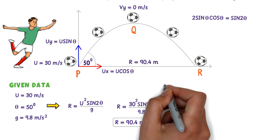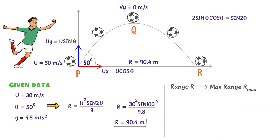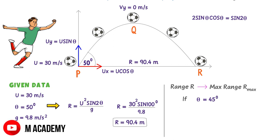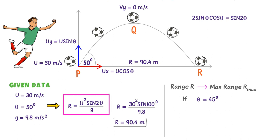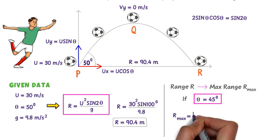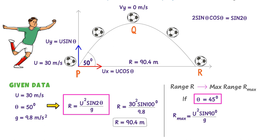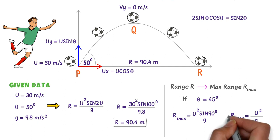Finally, remember this bonus tip: range R becomes maximum range R_max if the angle of projection theta equals 45 degrees. For example, using R equal to u² sin 2 theta upon g with theta equal to 45 degrees, R_max equals u² sin 90 degrees upon g. Since sin 90 degrees equals 1, R_max equals u² upon g. Therefore, a projectile will cover maximum horizontal range if it is launched at an angle of 45 degrees.